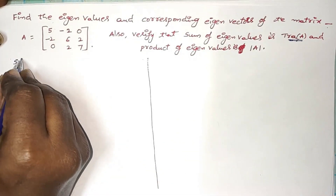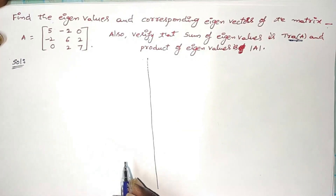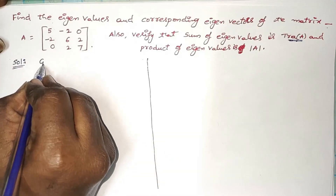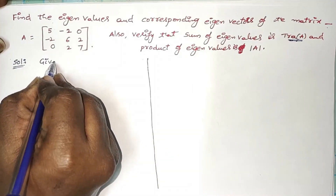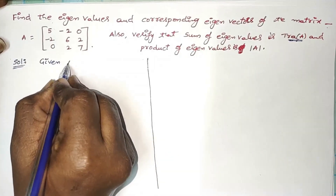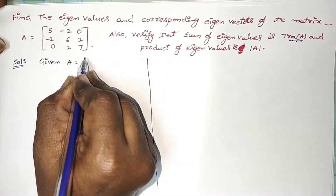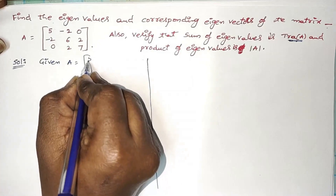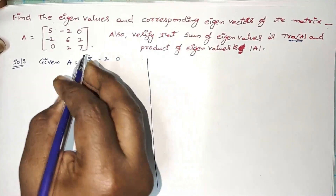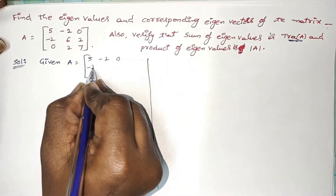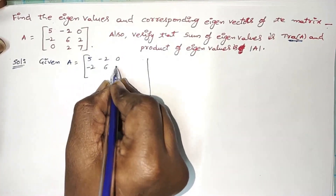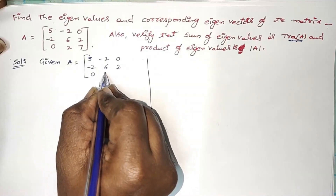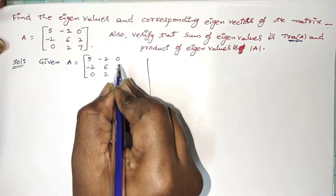Once again, I am writing the given matrix in the solution. A is equal to — the first row is 5, minus 2, 0; second row minus 2, 6, 2; third row 0, 2, 7.